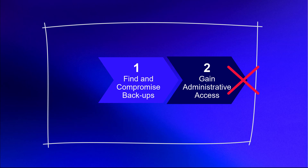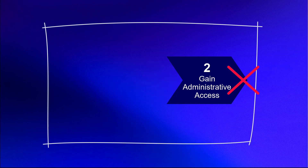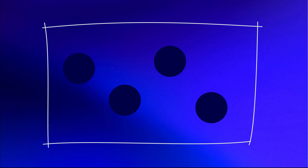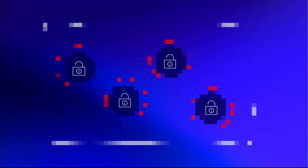For goal number two, which is to compromise as many systems as possible — widespread administrative access. For us, typically in a general Windows environment, this is domain admin. We want administrative access to as many systems as possible, because the threat actors want to encrypt as many systems as possible to cause the largest disruption.